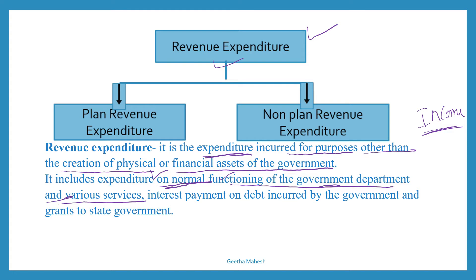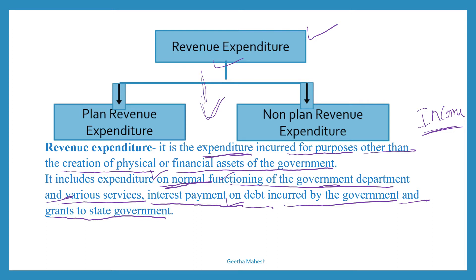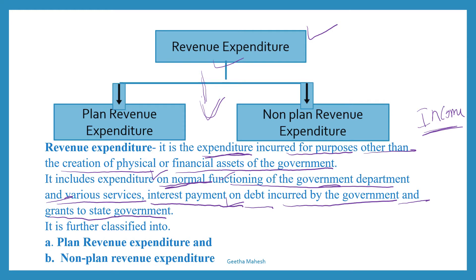Revenue expenditure is also incurred to make interest payments on debt incurred by the government. The central government will take a loan and has to pay interest on it — that expenditure we call revenue expenditure. Sometimes the central government will give grants to the state government; that is also called revenue expenditure. Revenue expenditure has two types: planned revenue expenditure and non-planned revenue expenditure.